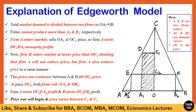At this price, both firms will sell their capacity outputs, that is OA2 and OB2. Here firm A will earn OC2-E-A2 profit, whereas firm B will earn OC2-F-B2 profit. But as per Edgeworth, we cannot consider OC2 as a stable price point because either firm can raise its price to OC1 to earn monopoly profits.